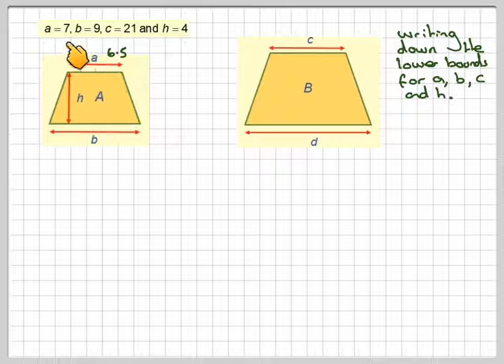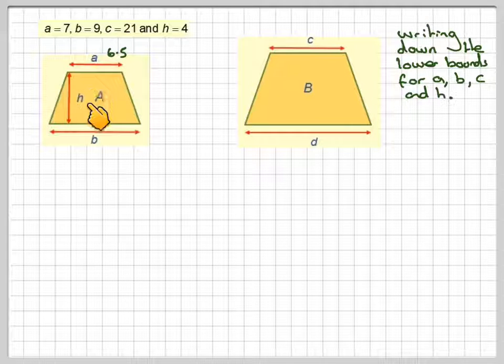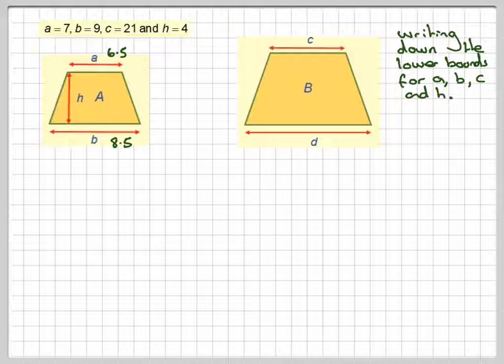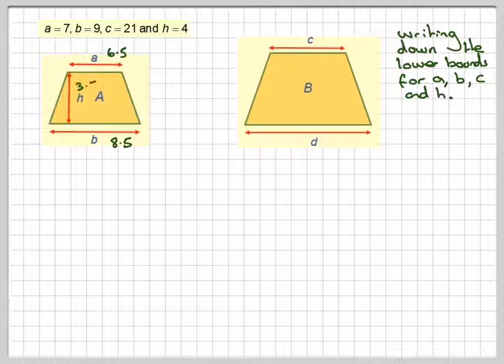Because a is 7, it will be 6.5. B will be 8.5. H will be 3.5, and c will be 20.5.